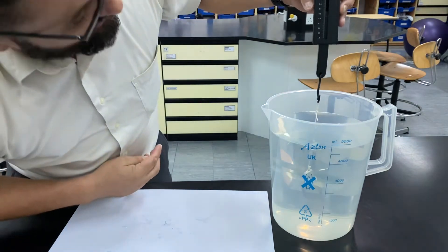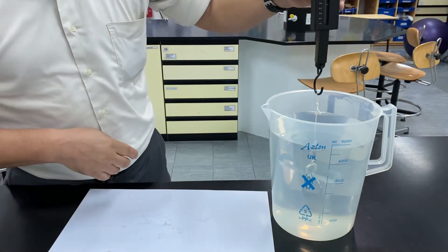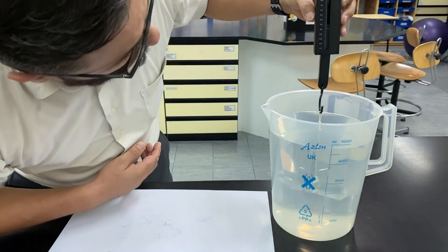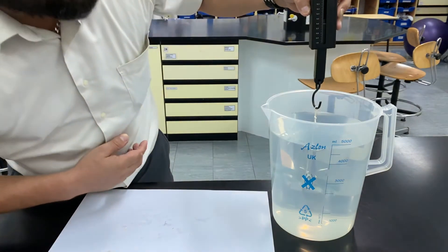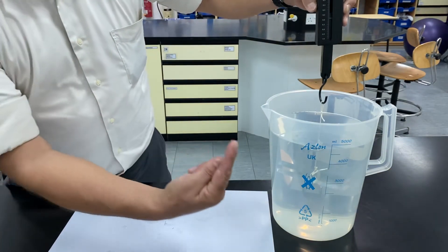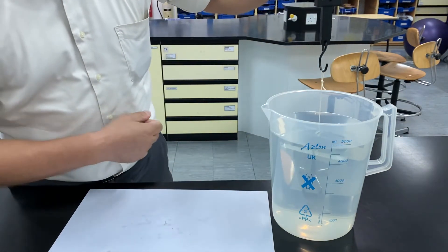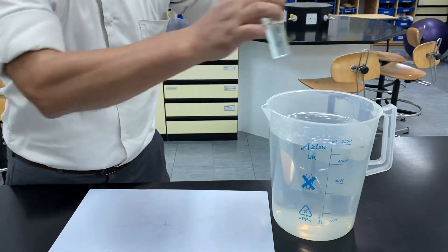So I would say that the upthrust on that glass block, because the force meter reading is 0.6 newtons, the upthrust must be 0.4 newtons. So that's the value of the upthrust.